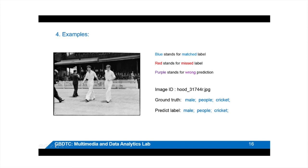This one blows me away because the computer somehow worked out this was a game of cricket, which is really on the edge of machine learning. While machine learning is very good at picking up objects — cars, buses, trains — it doesn't do well with semantic things. It could tell you there were a lot of people on the street but couldn't tell you it was a parade. It could tell you there were people standing around a cake but couldn't tell you it was a birthday party or a wedding. But this one somehow worked out what cricket is — very promising for us.